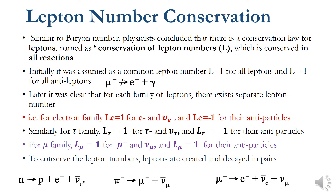An important feature of these two neo-conservation laws is that both apply to fermions. There is no such law for bosons — that is, for mesons. Fermions can be created in pairs and their reactions are limited by these neo-conservation laws. Thank you.